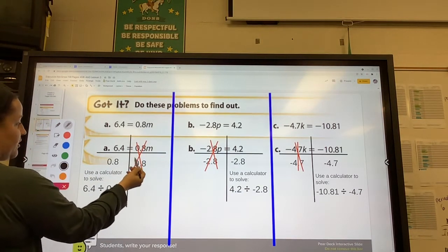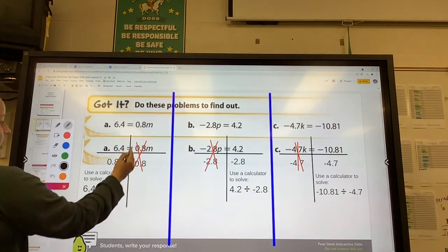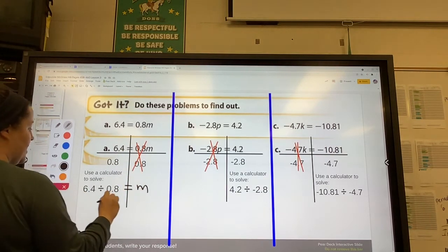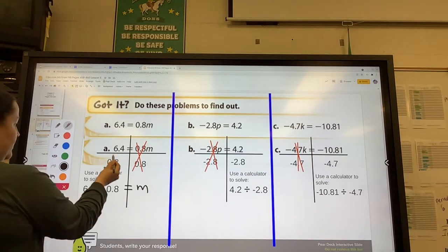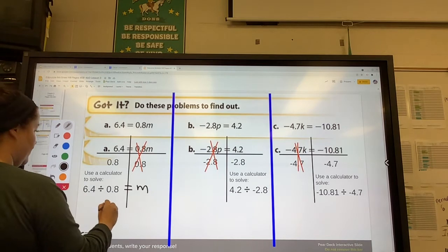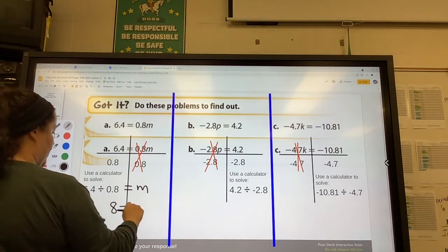So we're going to divide both sides by 0.8. 0.8 and 0.8 cancel out. We're left with M on this side equals, and then we can actually plug 6.4 divided by 0.8 into our calculator, and we'll get 8. So M equals 8.